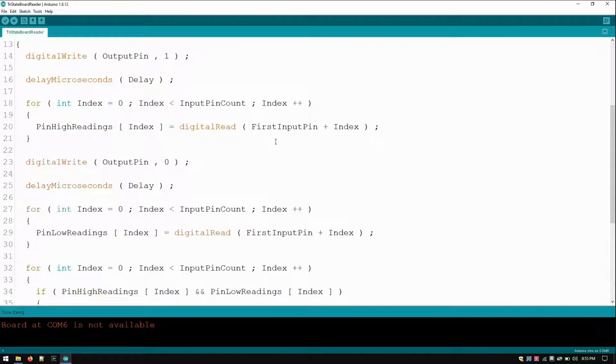So I changed that to four microseconds. So we set the control to high, delay for four microseconds, and then I read all 10 pins. Then I set the control to zero, delay another four microseconds, and then read all the pins again.